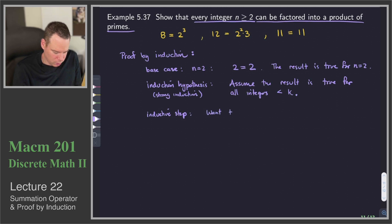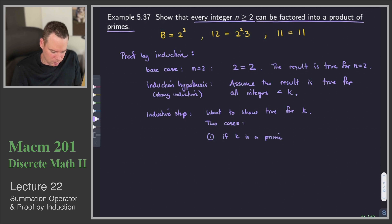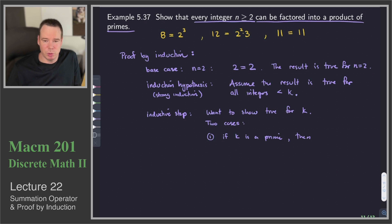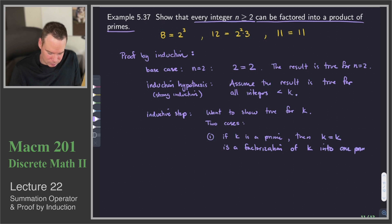For the inductive step, we want to show the result is true for k. We have two cases. Case one: if k is a prime, then k can be factored into a product of primes — namely itself. So k equals k is a factorization of k into one prime. The statement is true.